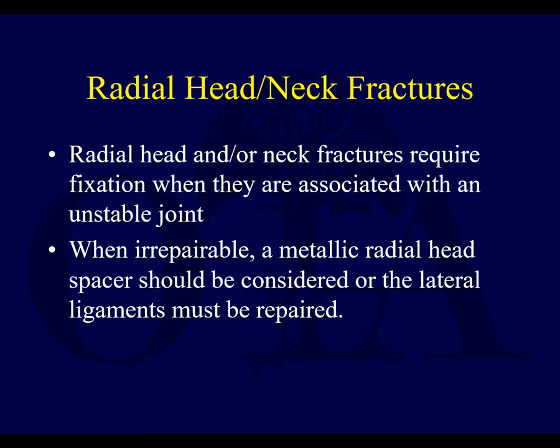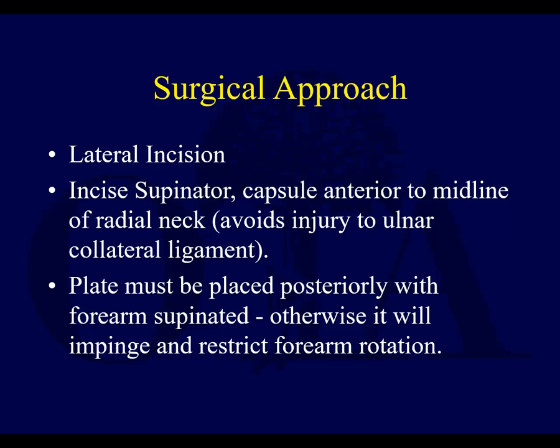With more complex elbow dislocations involving radial head fractures, these have to be fixed. If they can't be fixed, put a metal radial head in, in addition to ligament repair. This is typically done through a lateral incision, or a posterior midline incision with a lateral flap. The interval laterally goes through either a Kaplan or Kocher approach. The more posterior you are, the harder it is to access the radial head; the more anterior you go, the more likely you are to injure the posterior interosseous nerve.